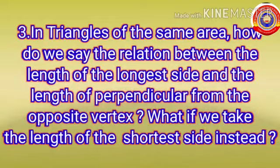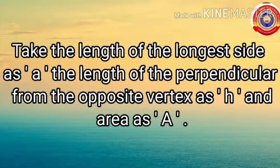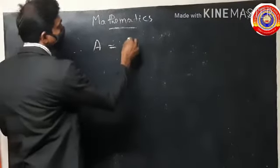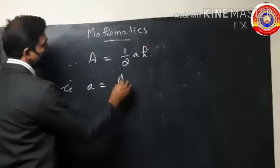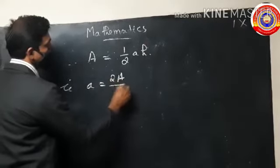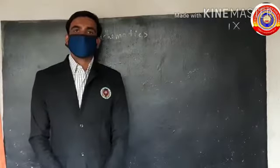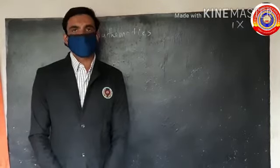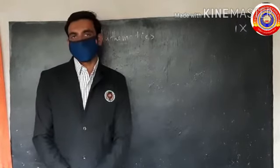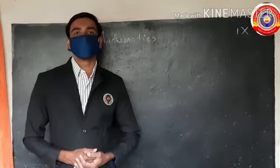In the third question, we have to state the relation of a triangle with the same area by its side and a perpendicular height from the opposite vertex. Take the length of the longest side as a, the perpendicular from the opposite vertex as h, and area as A. Therefore A = (1/2)·a·h, so a = 2A/h. Hence the length of the longest side is inversely proportional to the length of the perpendicular from its opposite vertex, and similarly the length of the shortest side is inversely proportional to the perpendicular from its opposite vertex.